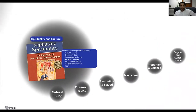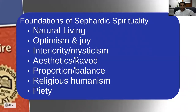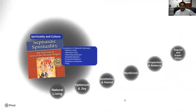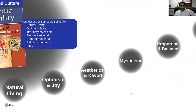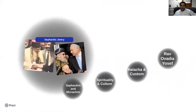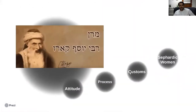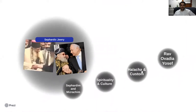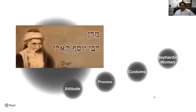Religious humanism and piety are also big in Sephardic tradition. The Hacham is supposed to be pious, and through that piety they transform themselves into a conduit for God's blessing. Now we're moving into halacha and custom.